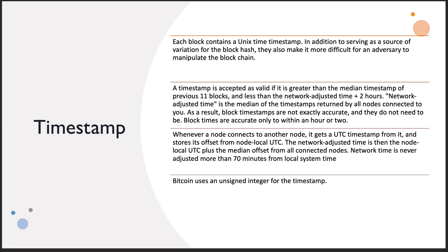The timestamp is basically a standard Unix timestamp — an unsigned integer, so at some point it will run out of space, about 68 years from when this was recorded. The timestamp has to be accepted as valid if it's greater than the median timestamp of the previous 11 blocks, within network-adjusted time of plus or minus two hours. Block timestamps don't need to be exactly accurate — only within an hour or two — so there is some time delay built into the networking process.